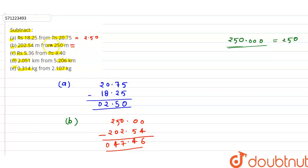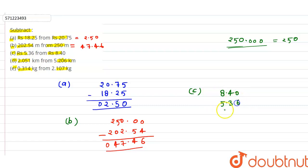For part C, we have to subtract 5.36 from 8.40. We cannot subtract 6 from 0, so we take a carry: 10 minus 6 is 4. Then 3 minus 3 is 0, and after the decimal, 8 minus 5 is 3. So 8.40 minus 5.36 equals 3.04.